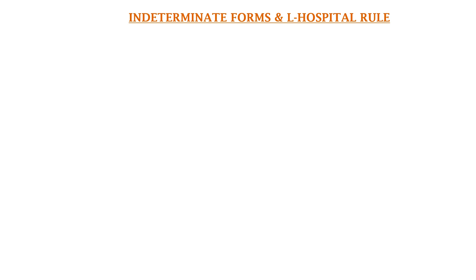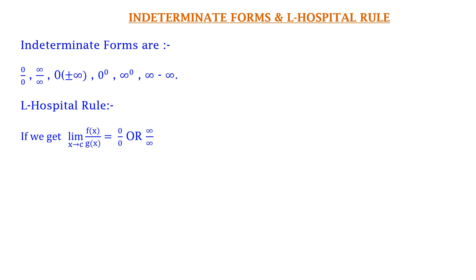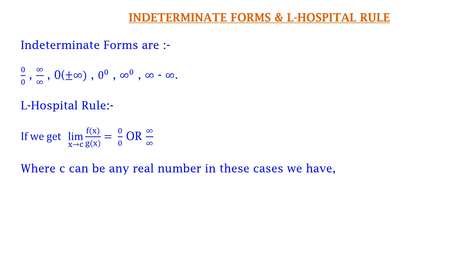Next, Indeterminate Forms and L'Hôpital Rule. Indeterminate forms are 0/0, ∞/∞, 0 × (±∞), 0⁰, ∞⁰, or ∞ - ∞. In this type of situation we cannot determine the limit. So we use L'Hôpital Rule, which says that if we get limit x tends to c of f(x)/g(x) equal to 0/0 or ∞/∞, where c can be any real number, then limit x tends to c of f(x)/g(x) equals limit x tends to c of f'(x)/g'(x), where f'(x) and g'(x) means the first derivative of the functions.